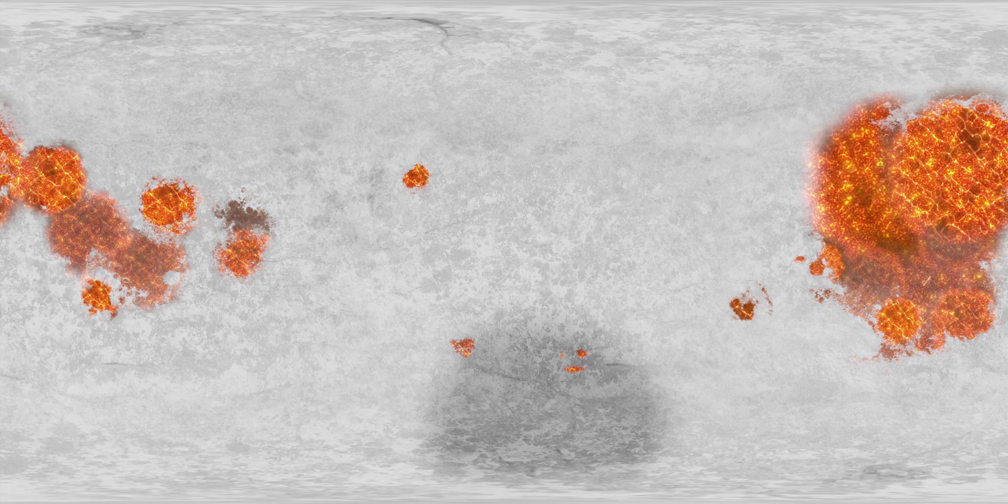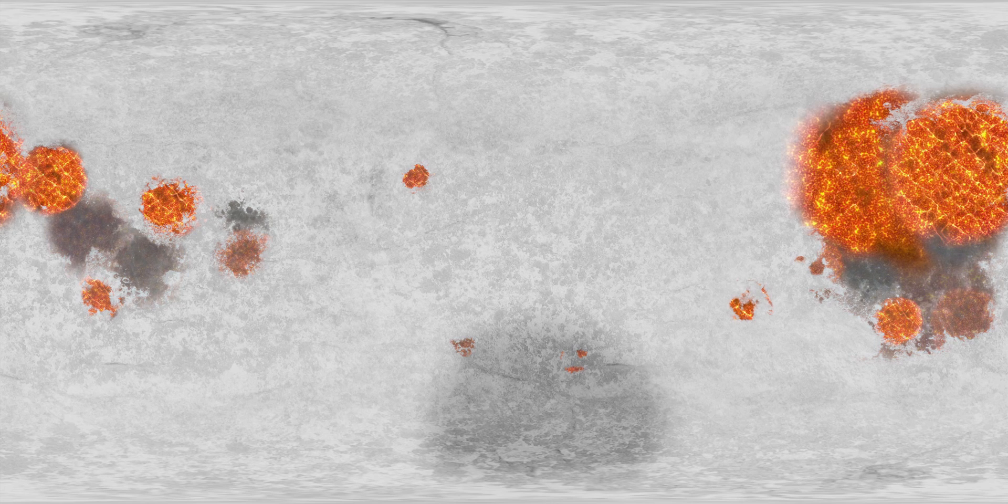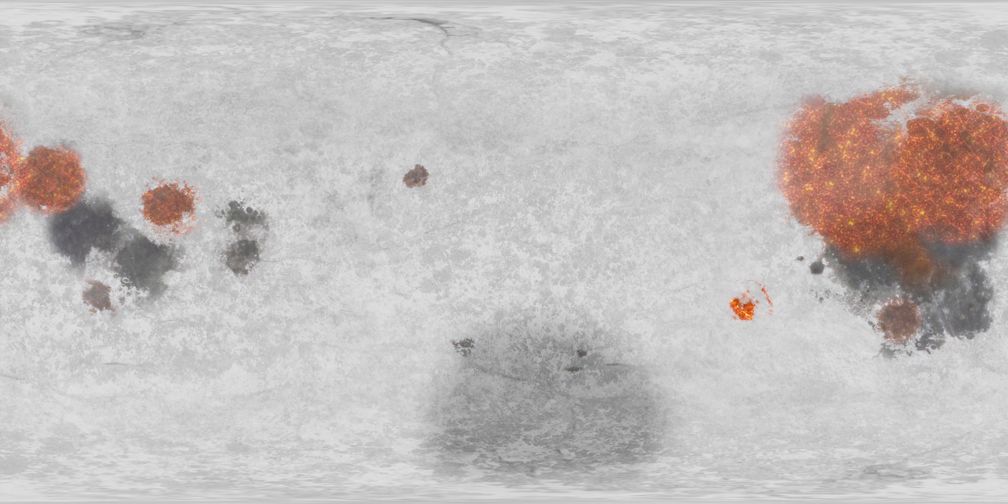Because of the high iron content of the basalt in the rock, the Maria reflect less light and therefore appear darker than the surrounding highlands of the Moon.